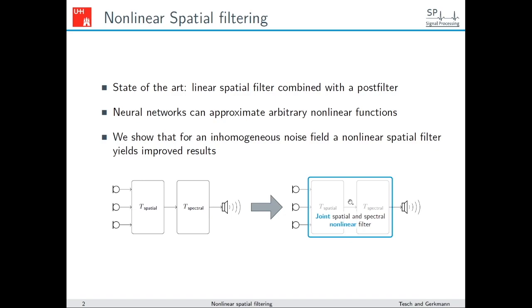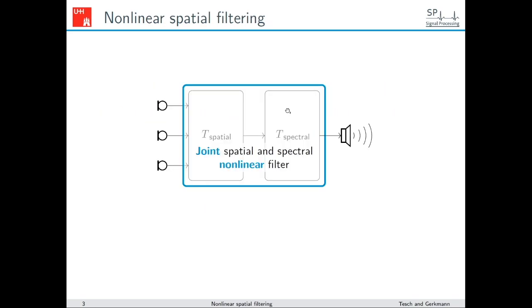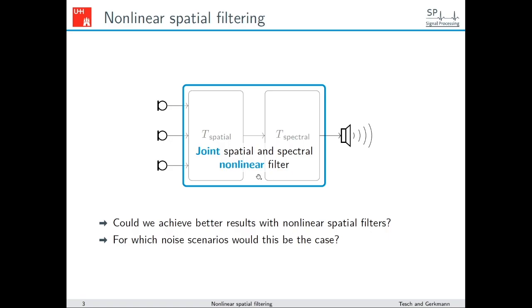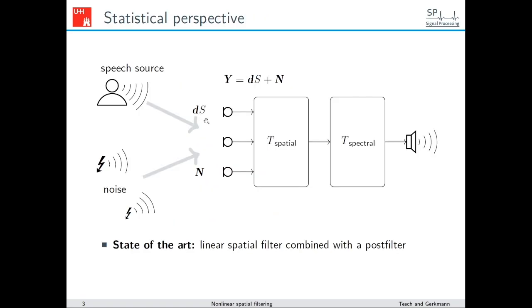We show that for an inhomogeneous noise field, a non-linear spatial filter yields improved results, which could motivate training DNNs to learn non-linear spatial filters for improved speech enhancement. The general research questions this talk addresses are: Could we achieve better results with non-linear spatial filters — meaning a filter that joins spatial and spectral processing and is non-linear — and for which noise scenarios would this be the case?